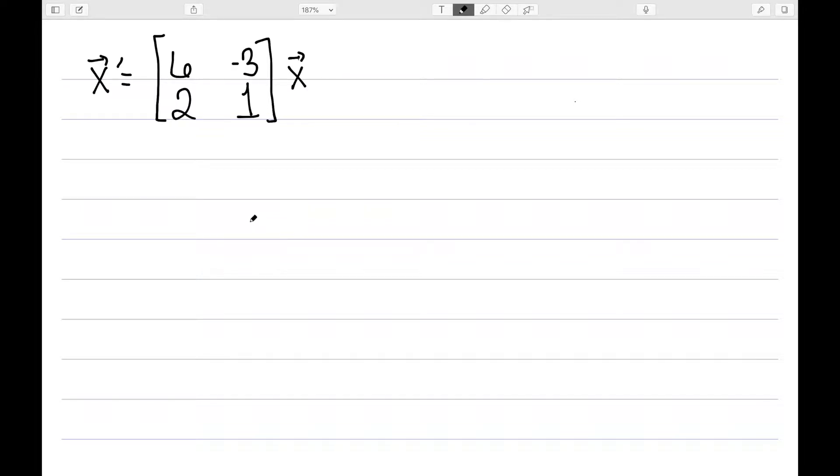Let's now consider a pretty basic system. Here it is in normal form. x prime is equal to the matrix [6, -3; 2, 1] times x. And let's suppose we have this solution: x equal to [e^(3t), e^(3t)] plus [3e^(4t), 2e^(4t)].